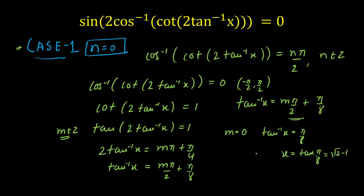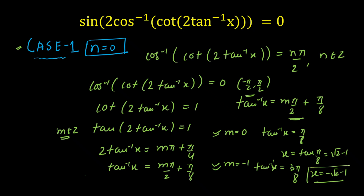Only two values of m are possible. For m=−1: tan⁻¹(x) = −mπ/2 + π/8 = −3π/8... actually tan⁻¹(x) = −π/2 + π/8 = −3π/8, so x = tan(−3π/8) = −(√2+1). Any other value of m exceeds the range of tan⁻¹(x). So for n=0, x = √2−1 and x = −(√2+1).